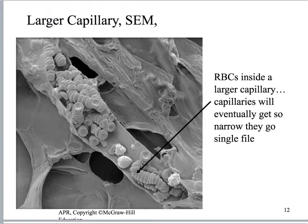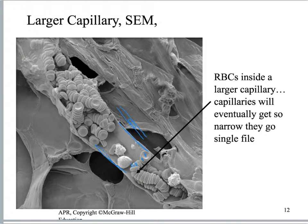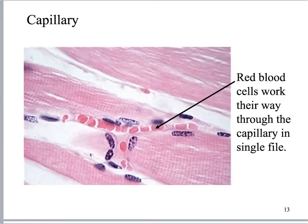Here's a large capillary where you can see all the little red blood cells going through it. Eventually some capillaries get really narrow — only as wide as a single red blood cell — and the red blood cells actually need to become kind of torpedo-shaped. Here is a nice example of a small capillary where the red blood cells are going through single file and have taken on more of a torpedo shape.